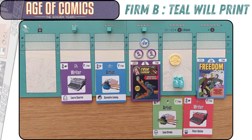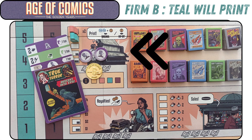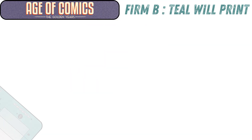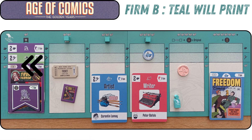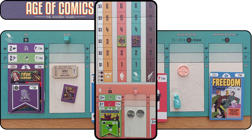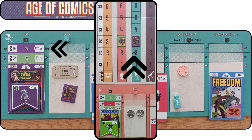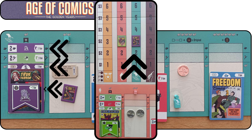Firm B — Teal — will print. They pay two idea tokens and four dollars, as this is the value of the comic with a value two writer and value two artist. They collect the bonus super transport ticket and place their newly printed mini comic on the fan track with three fans — due to having a specialized horror writer, one fan for publishing a horror comic, and one fan for gaining the mastery token for being the first to print a horror comic.